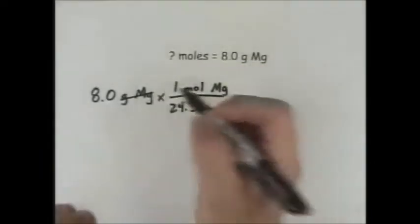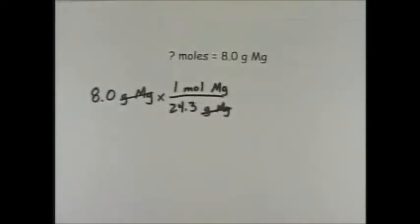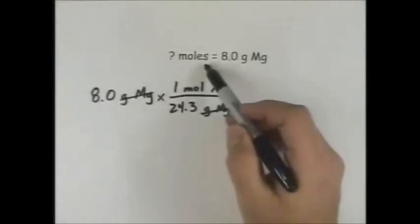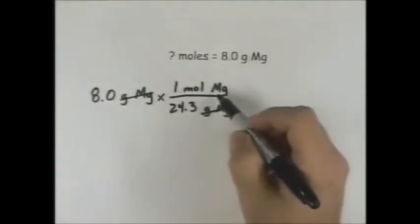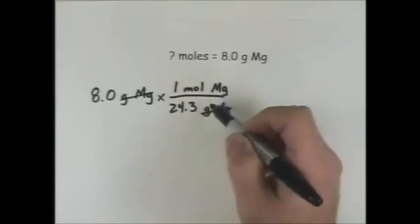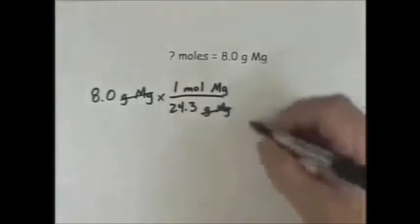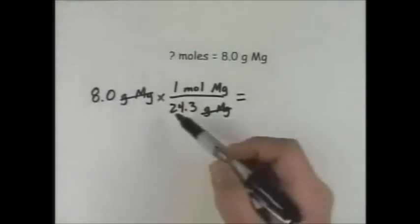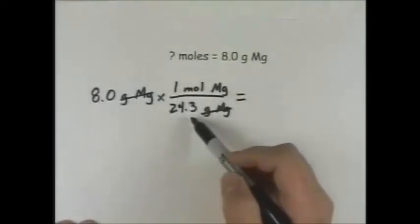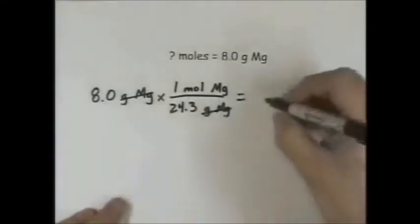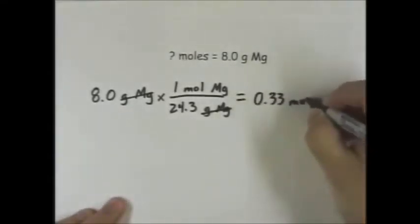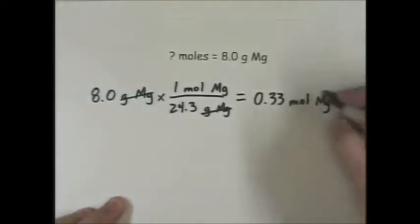Our grams of magnesium cancel. Look at our question mark and our units — we're looking for moles, and that's what we have left. So we've answered the question that we're asking. All we have left to do is multiply 8.0 times 1, and then divide by 24.3. This gives us 0.33 moles of magnesium.